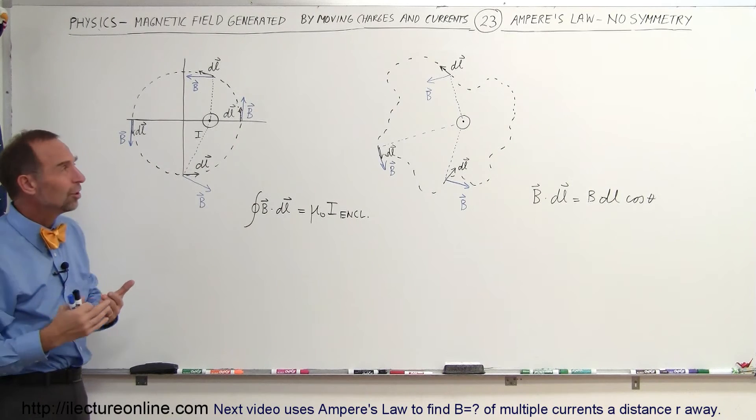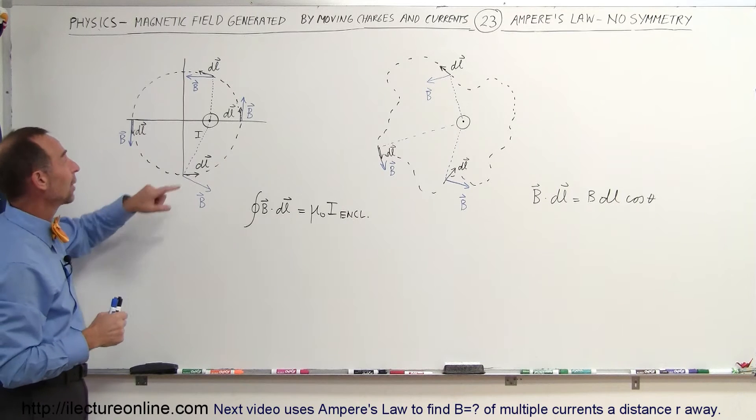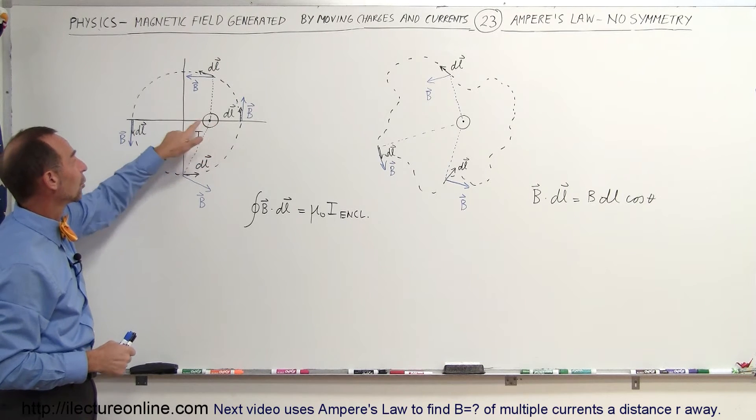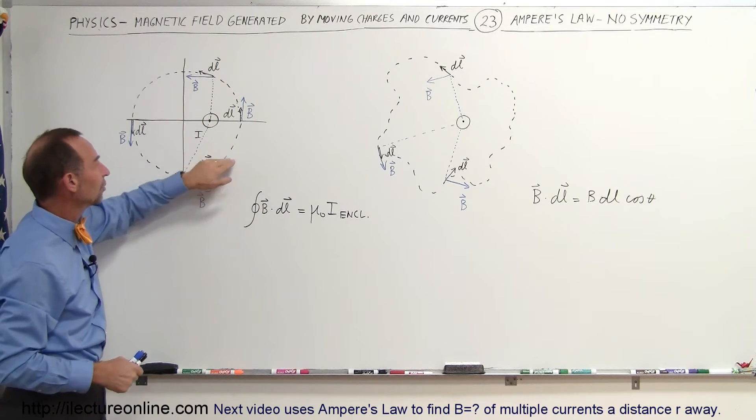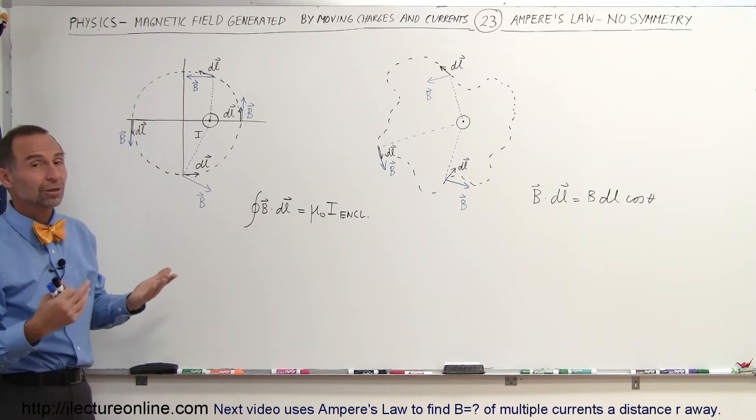But again, when you do this, when there's no symmetry, it's going to be a very difficult problem and not recommended. You want to go ahead and take the current right at the center so that everything is perfectly symmetric, like we saw in the previous example, and then the integral is just a cinch.